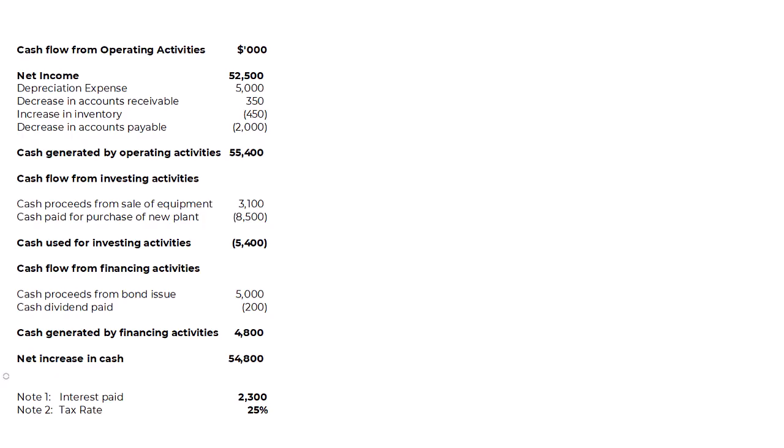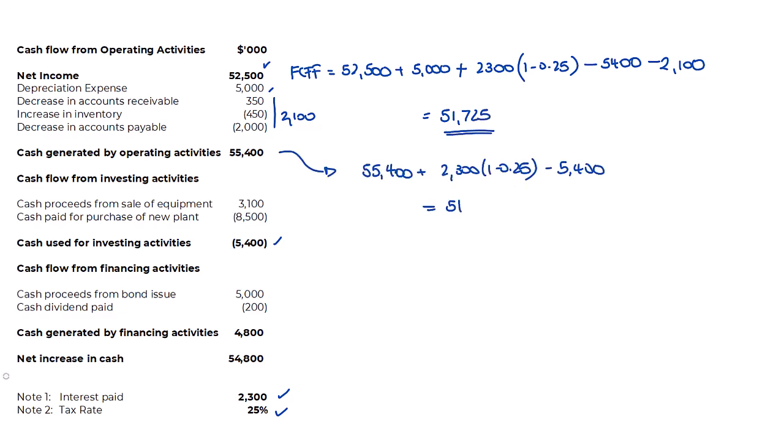I'm not going to walk through the whole thing, but obviously you can pause the video and enjoy it at your leisure. But you should see if you apply the formula correctly. FCFF comes to 51,725 using CFO. FCFE using CFO $55,000.